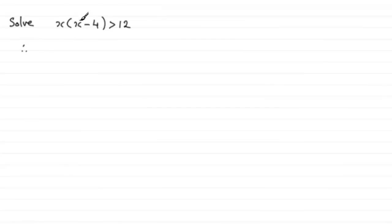So therefore we're going to get x times x which is x squared and x times minus 4 which is minus 4x. And this is going to be greater than 12.